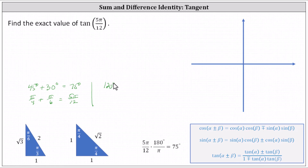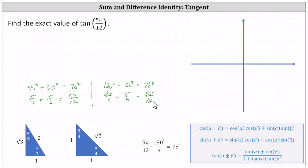That's not the only option, however. We could also use 120 degrees minus 45 degrees, which equals 75 degrees. In radians, since pi divided by three is 60 degrees, 120 degrees equals two pi divided by three radians minus pi divided by four radians, which still gives five pi divided by 12 radians. But we'll go ahead and use the sum of pi divided by four and pi divided by six.